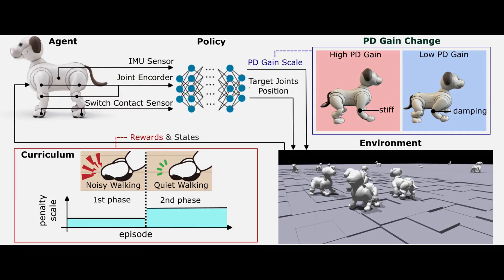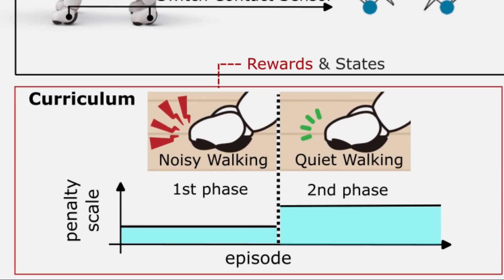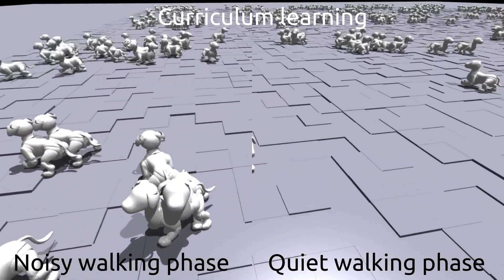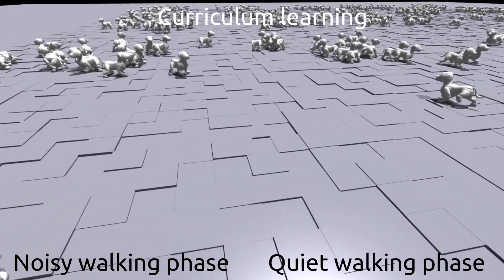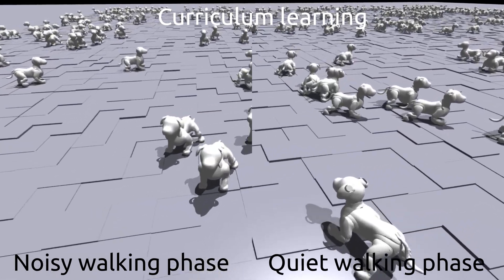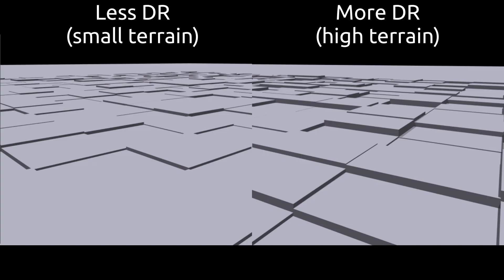Thirdly, we employ a curriculum learning approach that initially trains the robot on basic locomotion and progressively applies penalties to noisy walking, such as foot contact velocity, to ensure quieter walking. The extent of domain randomization, such as the friction and height of terrain, influences the trade-off between quietness and robustness.